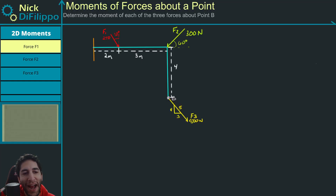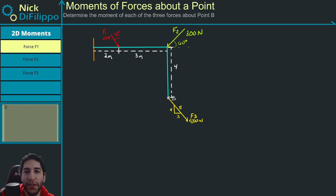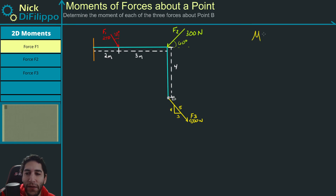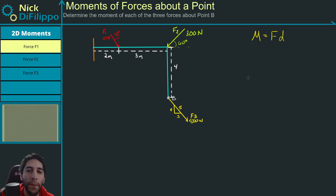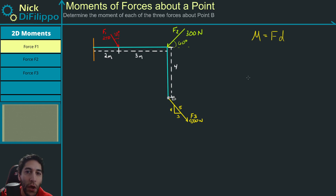In this problem, we are asked to figure out the moment that each of these forces — F1, F2, and F3 — produce around point B. We need to remember the equation for a moment: the magnitude of a moment is equal to the magnitude of a force times the perpendicular distance that force is from the point we are taking our moment about.